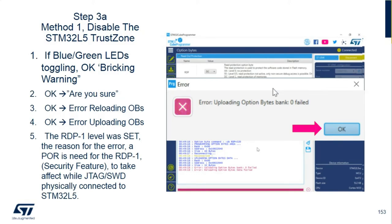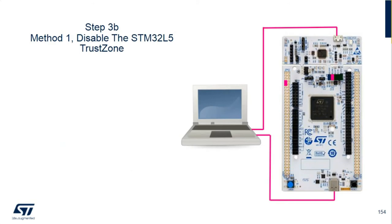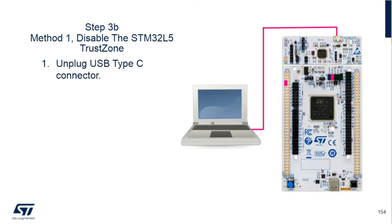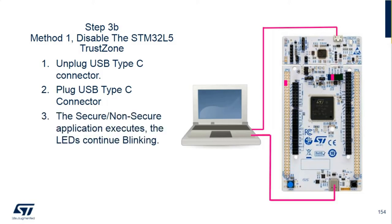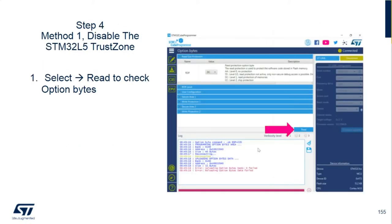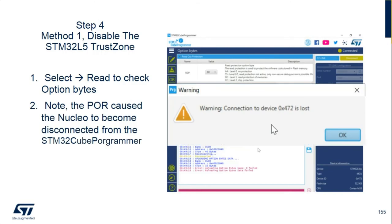Look at your LEDs — they've stopped toggling. Nothing is actually working on the board. To perform the power-on reset, unplug the USB Type-C cable because that's supplying power to the board, then plug it back in to recycle power. The secure and non-secure application will start executing again and the LEDs will start blinking. Once we cycle power and the LEDs are blinking, we're going to select read of the option bytes. I did this on purpose so you can see that the physical connection between the Cube Programmer and the STM32 L5 was broken — we'll have to reconnect.